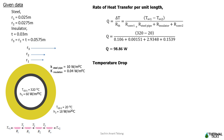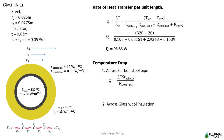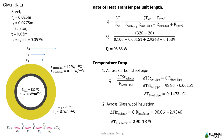We get Q = 98.86 W. The temperature drop across the carbon steel pipe: from the definition of thermal resistance, temperature difference = Q × thermal resistance of steel pipe, giving a temperature drop of approximately 0.1473°C. Similarly, the temperature drop across the insulating material is 290.13°C.